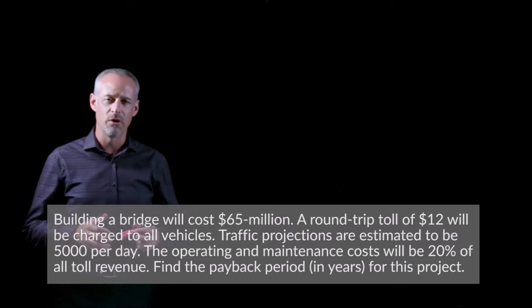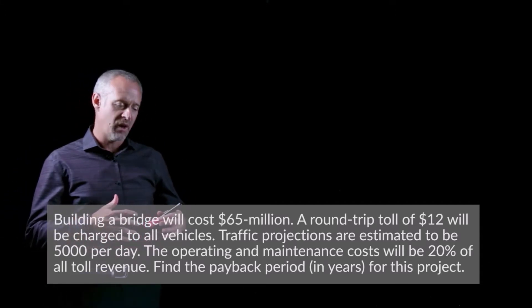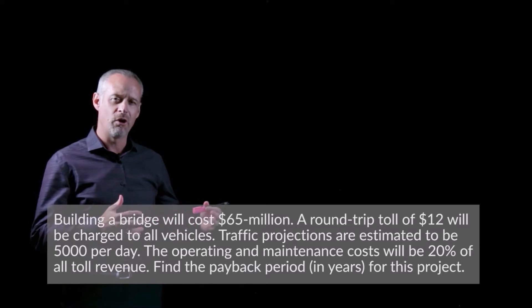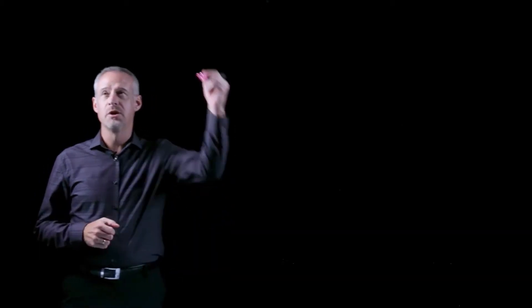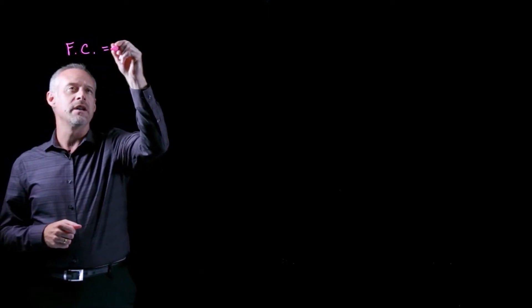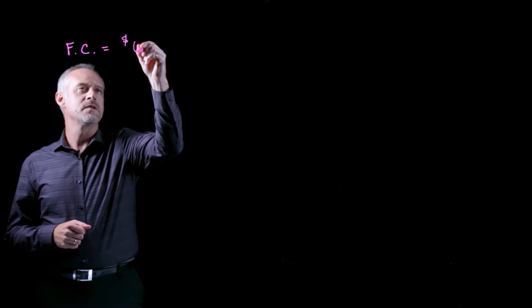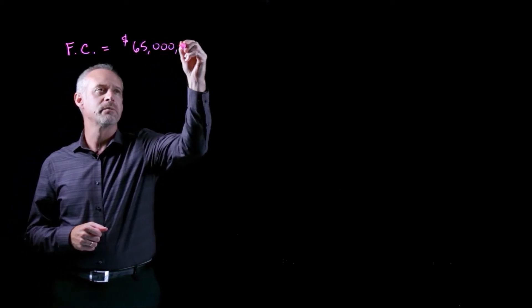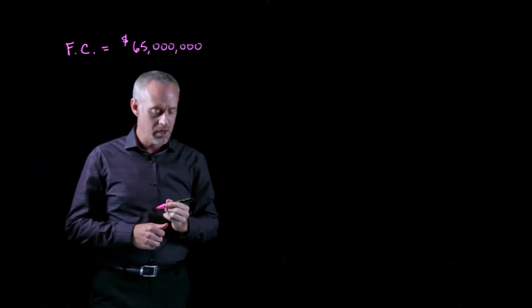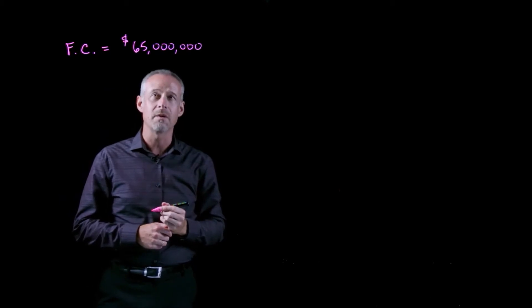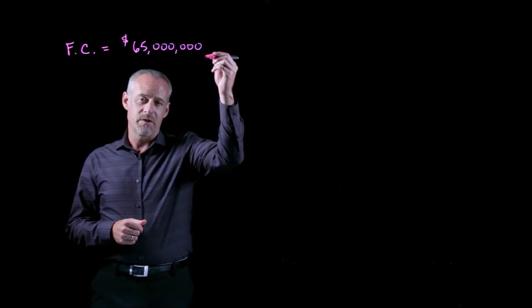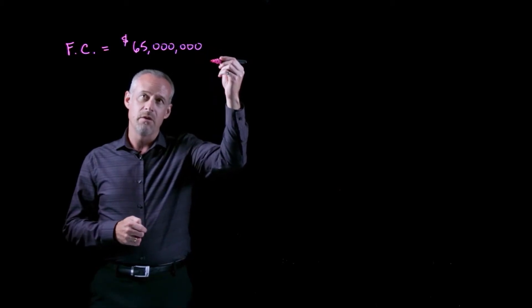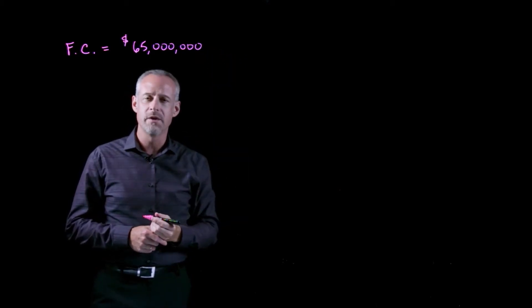So in this problem, we learn that the project involves the construction of a bridge. And the construction of the bridge has a first cost equal to $65 million. So a fairly expensive piece of civil infrastructure. This will be a cost. But we also learn that the bridge will generate revenue because it is a toll bridge.